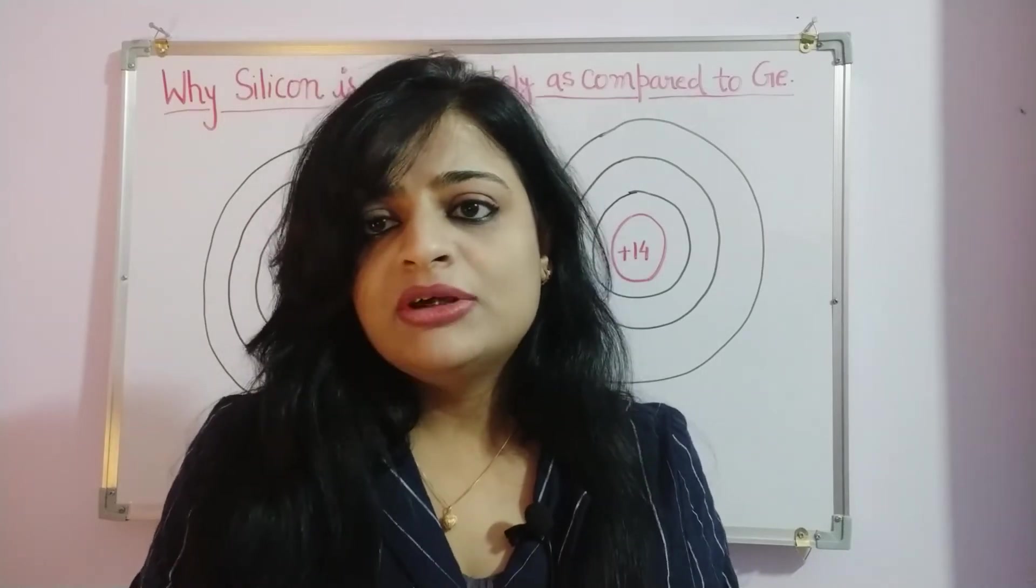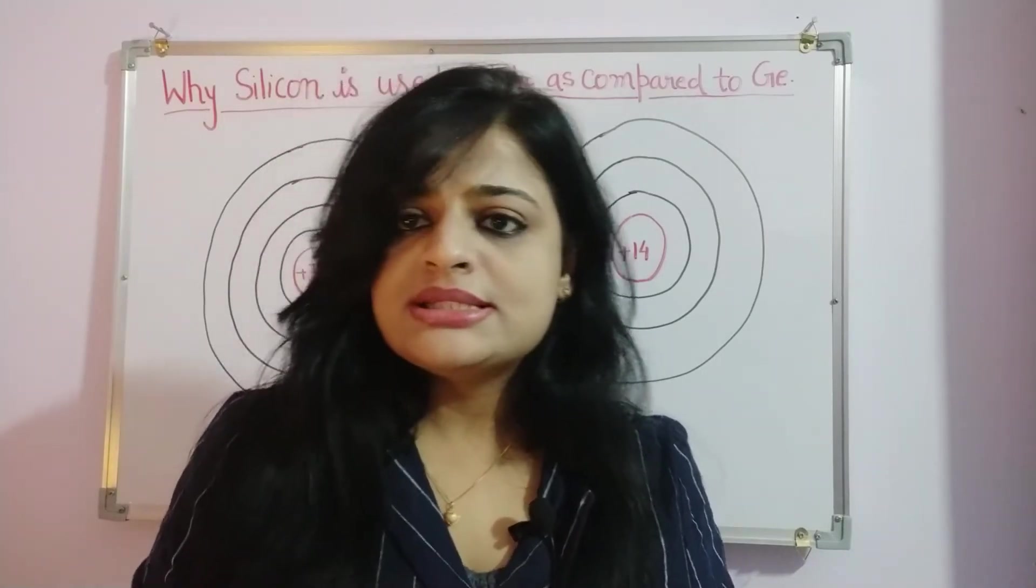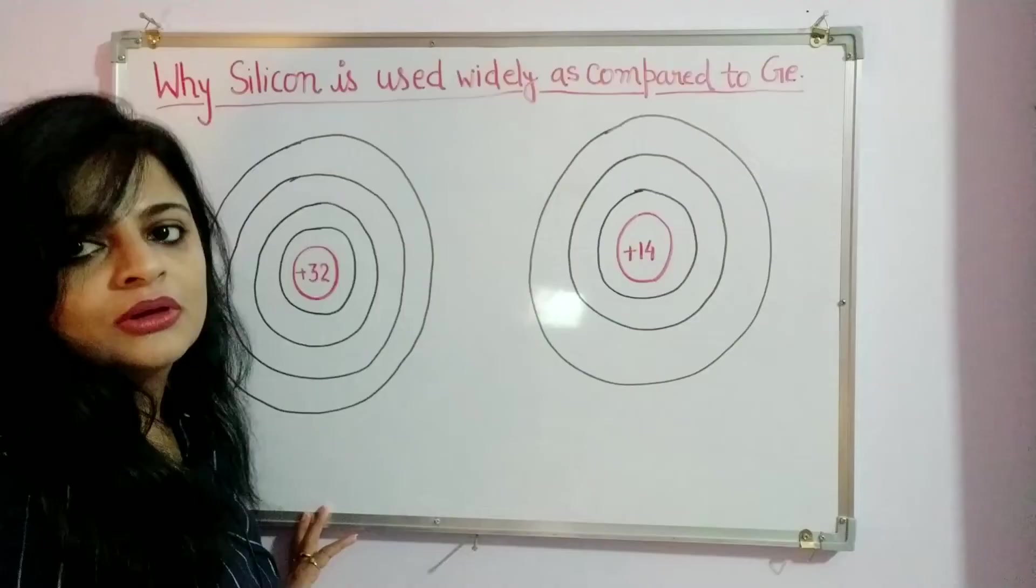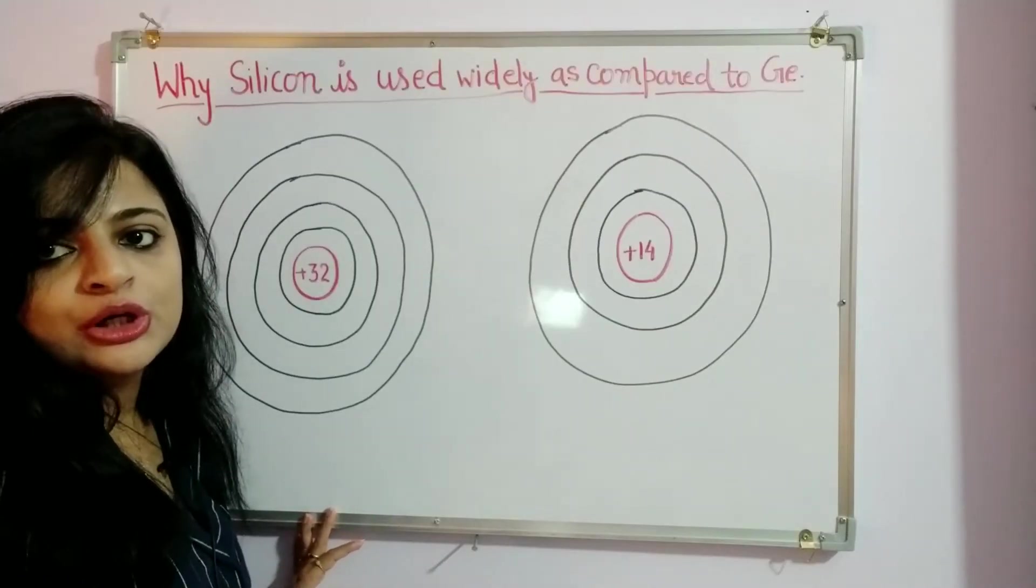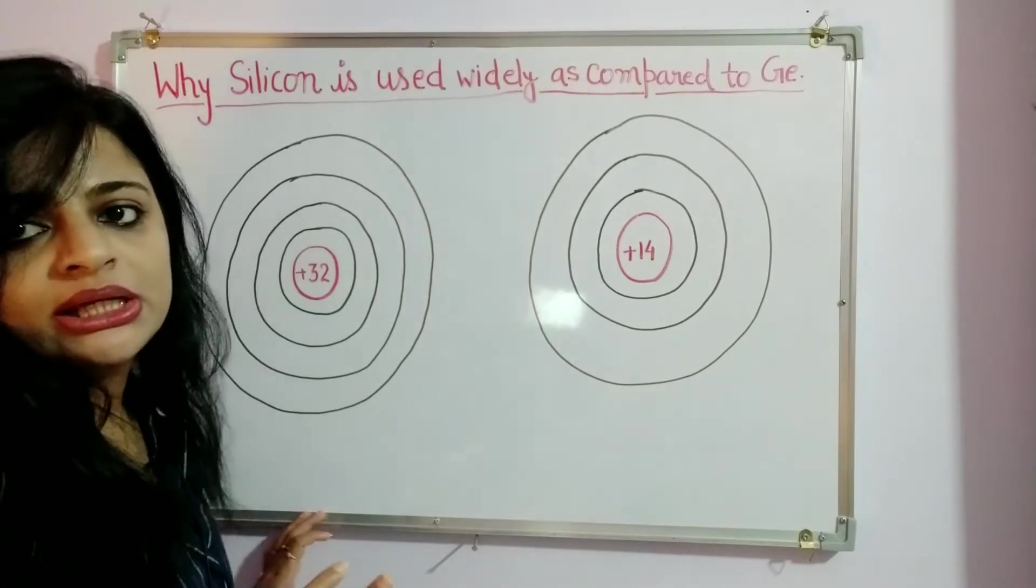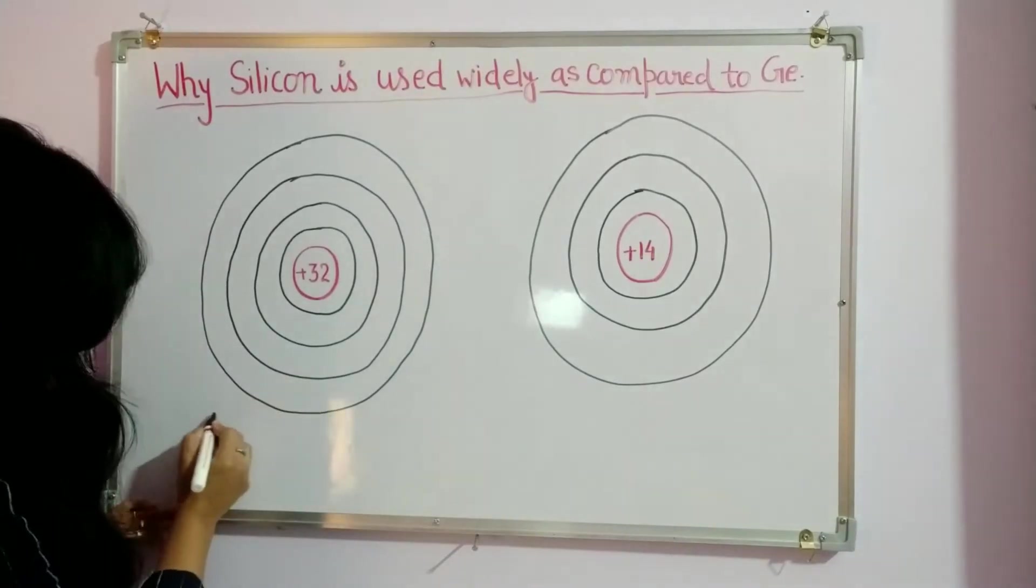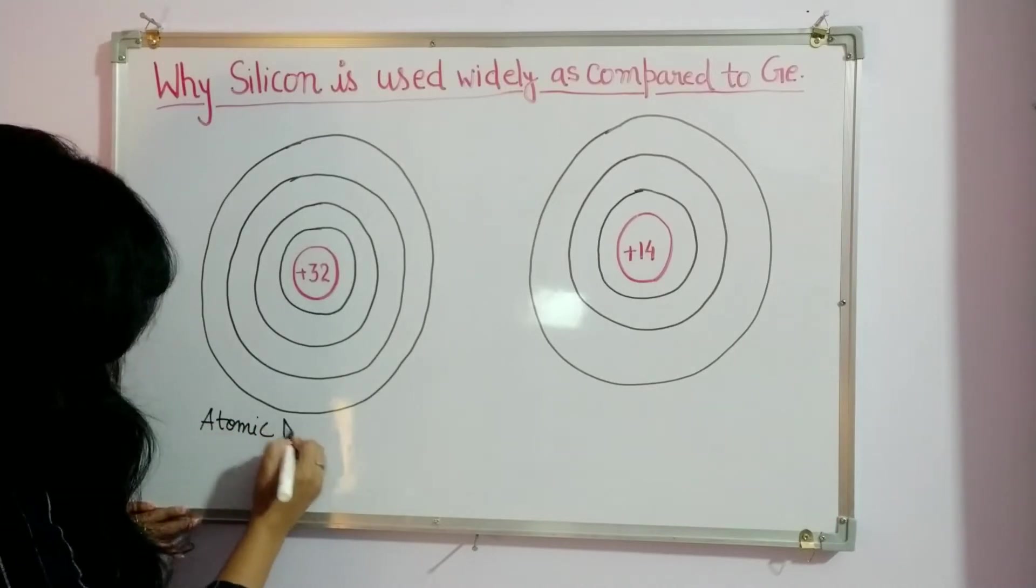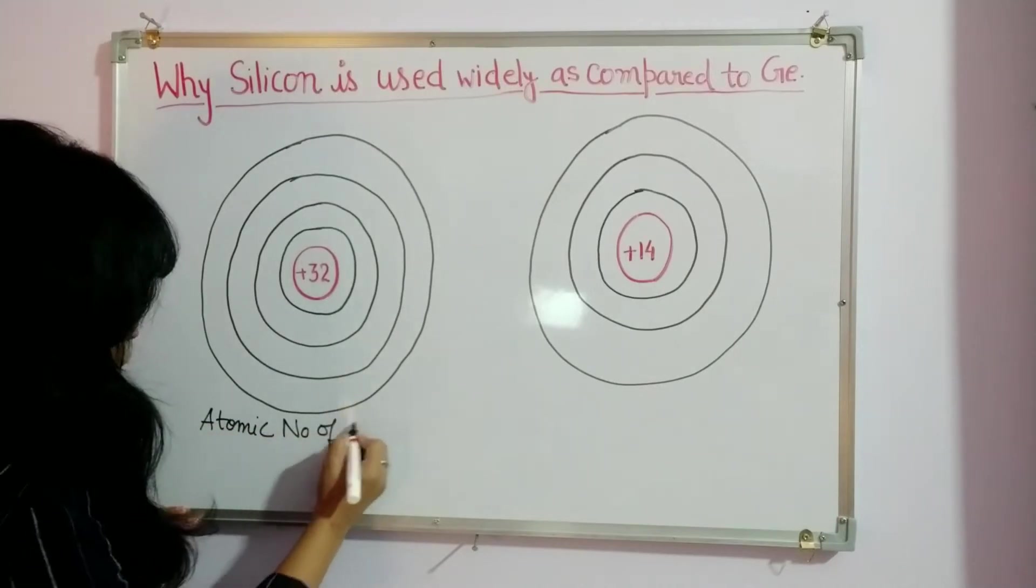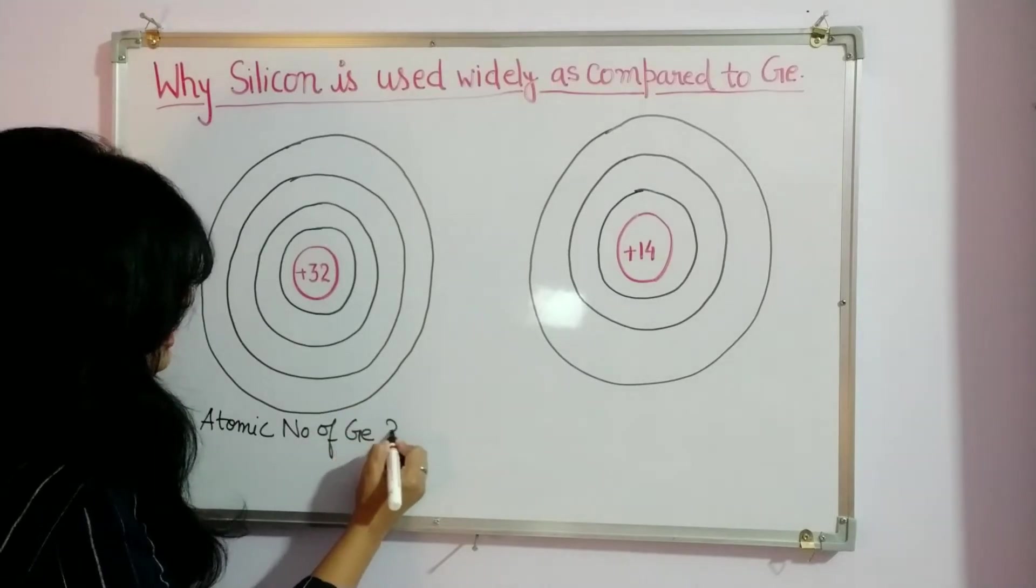So this is our topic of discussion today. Let's start. As we all know, the atomic number of germanium is 32.